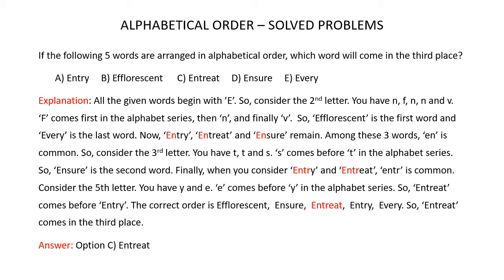Finally, when you consider Entry and Entreat, you will see that ENTR is common, so you have to consider the fifth letter. The fifth letters are Y and E. E comes before Y in the alphabet series, so Entreat comes before Entry. When the given 5 words are arranged in alphabetical order, the correct order is Efflorescent, Ensure, Entreat, Entry, and Every. So Entreat comes in the third place.